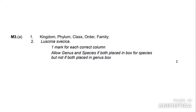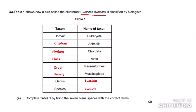Looking at the mark scheme: the first marking point is the names and order of the taxons — kingdom, phylum, class, order, family — which we got, so we get that mark. The second mark is for putting the correct genus and species. It says one mark for each correct column, so if you got the wrong order you won't get half a mark. It also says allow genus and species if both are placed in the box for species, but not if both are placed in the genus box. So if you put the entire binomial name in the species section you'll get the mark, but not if you wrote them both in the genus box.